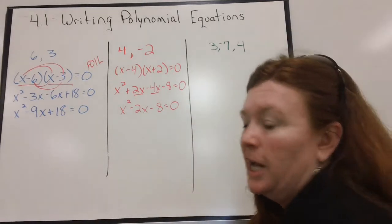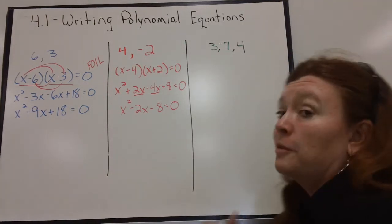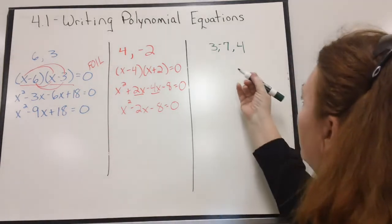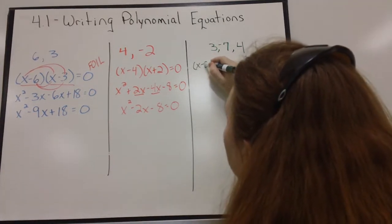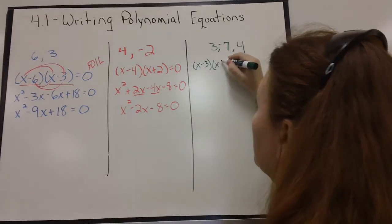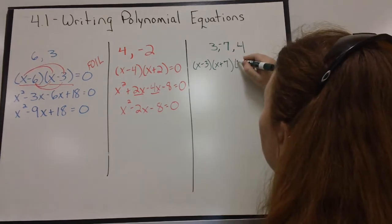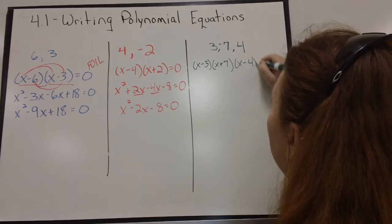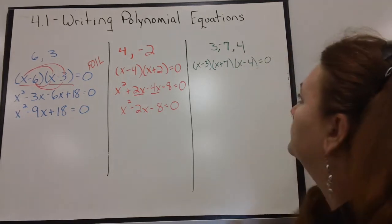Let's try the tougher one. Three terms. A 3 must have come from an X minus 3. A negative 7 must have come from an X plus 7. And a 4 must have come from an X minus 4.